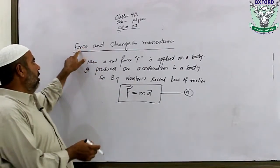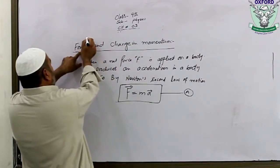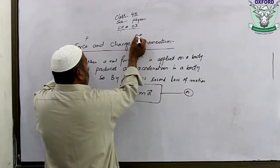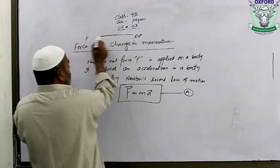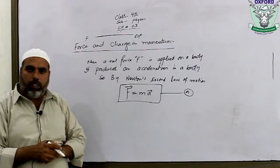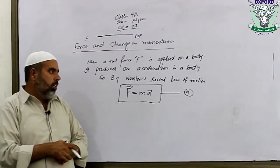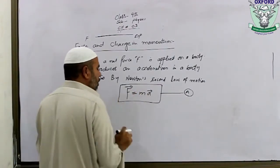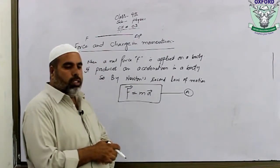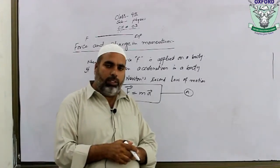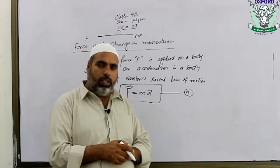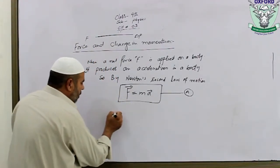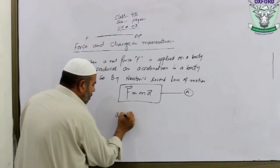The force and the change in momentum is delta P. The change in momentum is delta P. The mass is related to the change in momentum. Acceleration is the rate of change of velocity — the time rate of change of velocity.